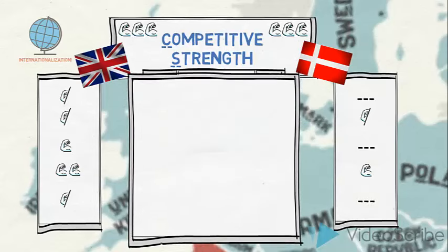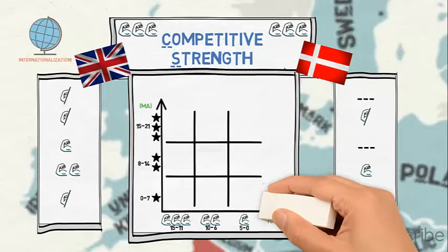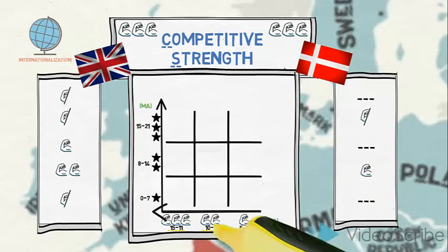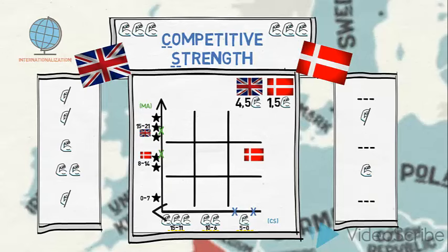Now we can place the two markets on the x-axis of our matrix based on competitive strength scores. Note that the x-axis points the opposite way to what you might expect. We used five factors enabling a maximum score of 15 biceps. Denmark reached only 1.5 biceps and the UK reached 4.5 biceps. Denmark is placed in the middle position on market attractiveness and slides to the corresponding competitive strength position, while the UK, placed in the upper region on attractiveness, slides to its position with 4.5 biceps.